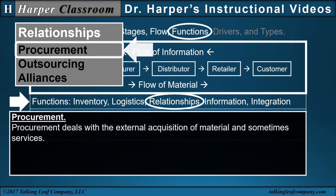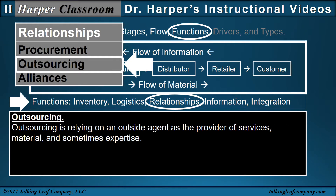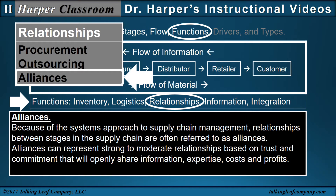Relationships. Procurement deals with the external acquisition of material and sometimes services. Outsourcing is relying on an outside agent as the provider of services, material, and sometimes expertise. Because of the systems approach to supply chain management, relationships between stages in the supply chain are often referred to as alliances. Alliances can represent strong to moderate relationships based on trust and commitment that will openly share information, expertise, costs, and profits.